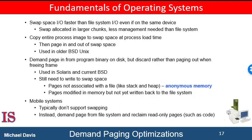An additional aspect of demand paging is the handling and overall use of swap space. Swap space is that space on the hard disk which is used by the operating system to store data pages that are currently not needed. This swap space can be a partition as well as a swap file. Input-output to swap space is generally faster than it is to the file system, because swap space is allocated in much larger blocks and file lookups and indirect allocation methods are not used.